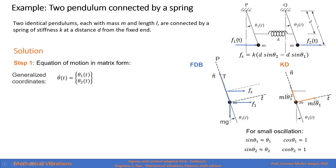In the kinetic diagram, we have the tangential acceleration, which is mass times L times angular acceleration, and the normal acceleration, which is mass times length times angular velocity squared. We solve this problem for small oscillations, meaning the sine of each angle is approximated to theta 1 or theta 2 respectively, and the cosine is approximated to 1. The generalized coordinates will be theta 1 and theta 2.